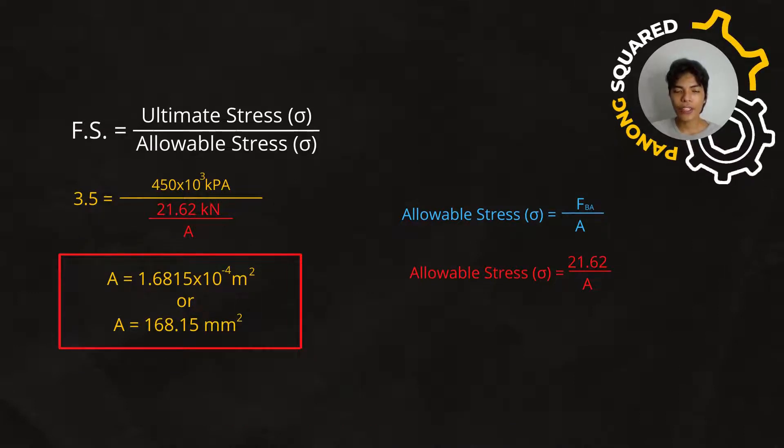Using the formula for the factor of safety, we have the ultimate stress over the allowable stress. As we all know, the allowable stress, that is written in color blue, the formula is FBA over A. The FBA, we already calculated that one, that is equal to 21.62. So, our allowable stress is equal to 21.62 over A. And we're going to use this value and input it for the formula for the factor of safety.